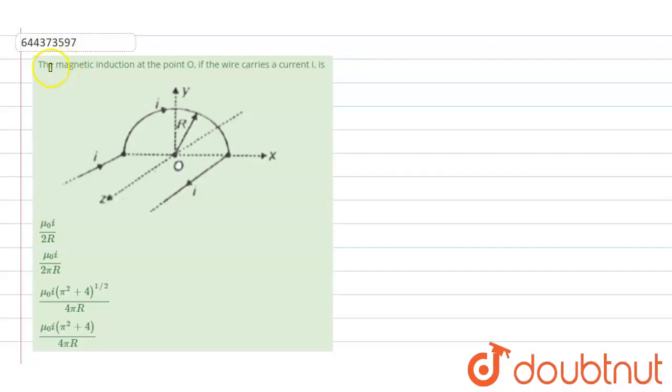Hello students, so the question is to find the magnetic field at the point O if the wire carries a current i.